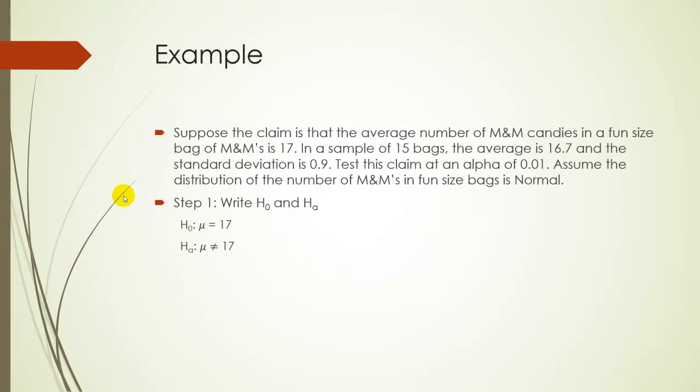Okay, so suppose that the claim is that the average number, and again, I'm making this up, that the average number of M&M candies in a fun-sized bag of M&Ms is 17. In a sample of 15 bags, the average was 16.7, and the standard deviation was 0.9. So, on average of those 15 bags, there was only 16.7 M&Ms per bag. Now, obviously, you can't have 16.7 M&Ms in a bag, but this is an average. That's okay. We want to test this claim at an alpha of 0.01, 1%, a 1% threshold, or 1% significance level. So, let's assume the distribution of M&Ms in a fun-sized bag is normal. Again, we have to make that assumption in order to continue with these small samples.